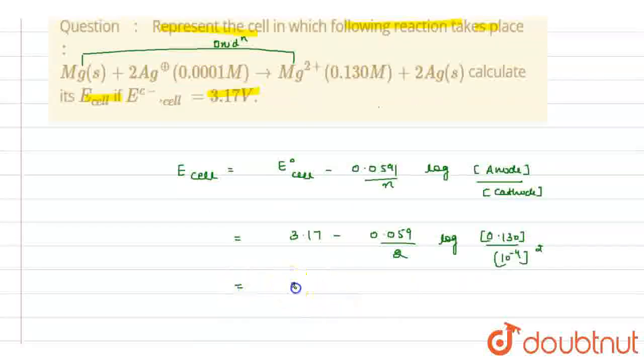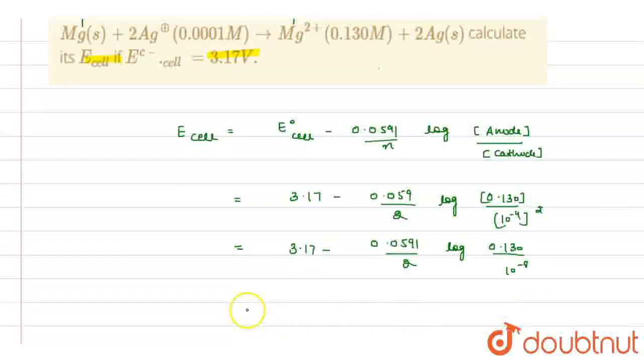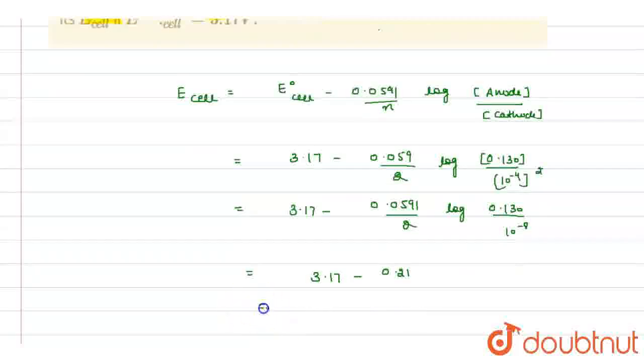So it will become 3.17 minus 0.0591 upon 2, log of 0.130 upon 10 raised to power minus 8. When we solve this equation, it comes out to be 3.17 minus 0.21, which is equals to 2.96 volt. So this is our answer. This is our E cell.